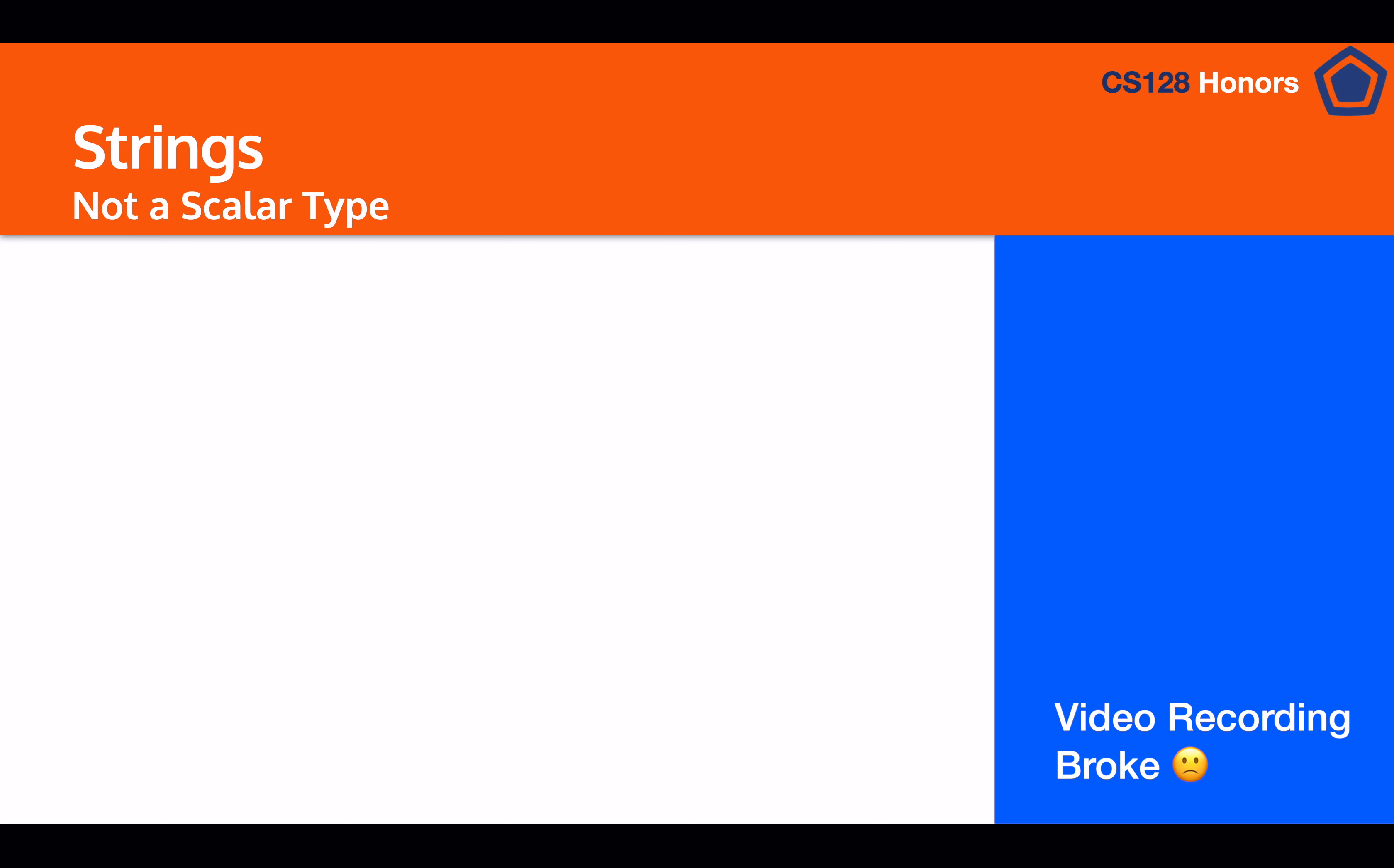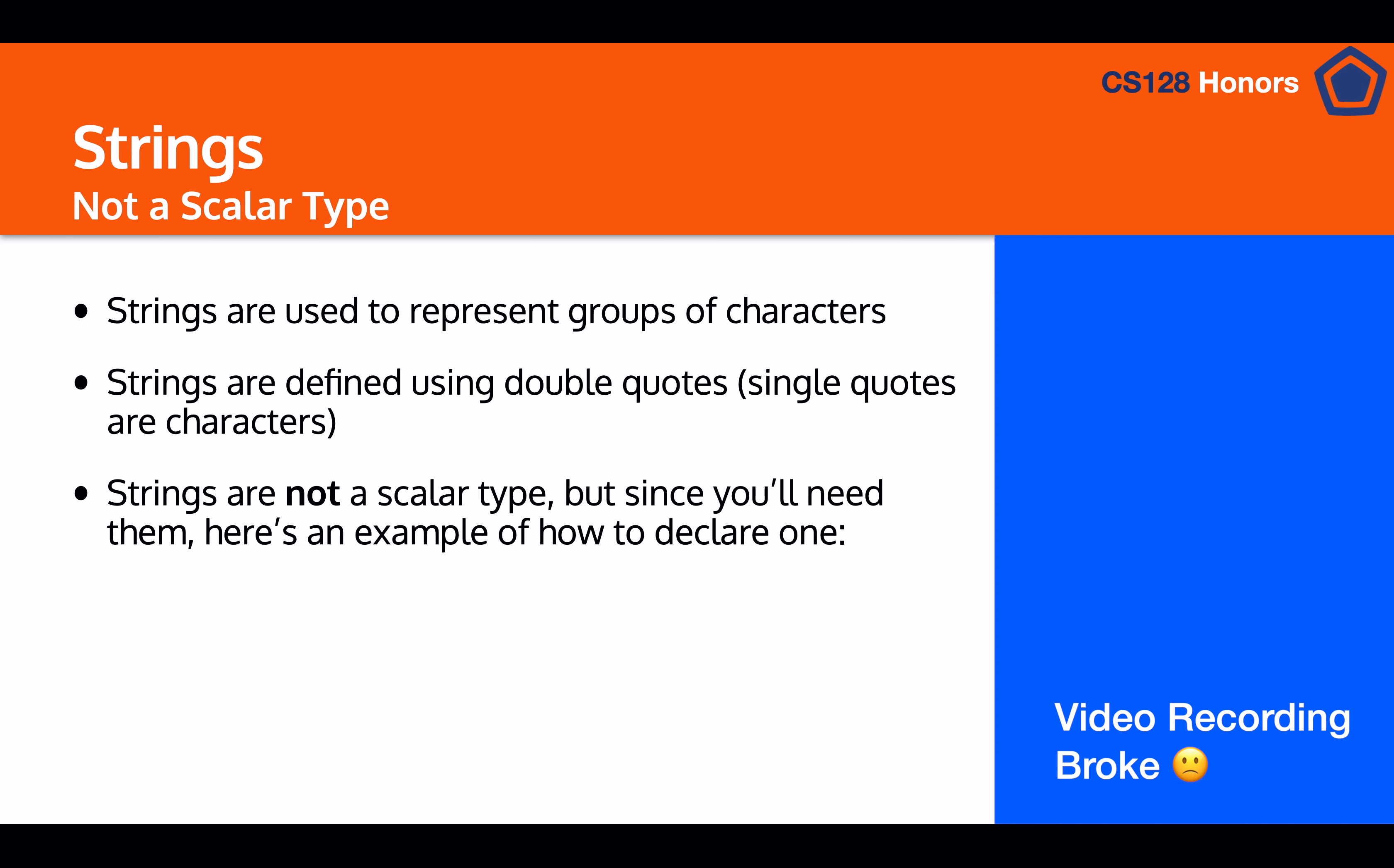So finally, we're going to talk about strings. And while strings aren't a scalar type, we still feel they're very important. So that's why we're throwing them into this lesson. So strings are used to represent groups of characters. And they're defined using double quotes, whereas the single quotes are used for characters. And so strings aren't a scalar type, but since we're going to be meeting them in the rest of our Rust lessons and everywhere else, we're teaching them to you now. And to declare one, all you have to do is say let and then the variable name equal to and use those double quotes that I mentioned before.